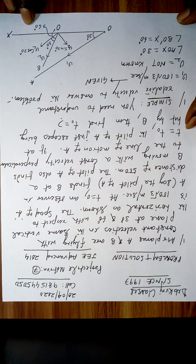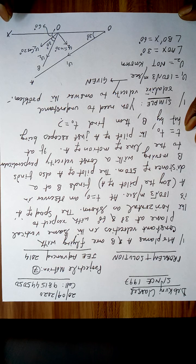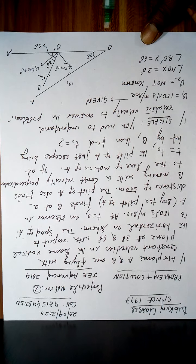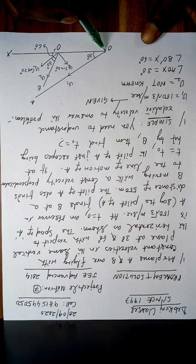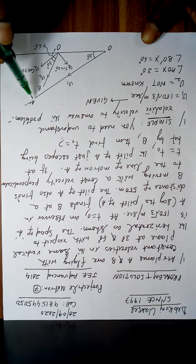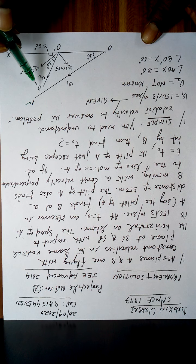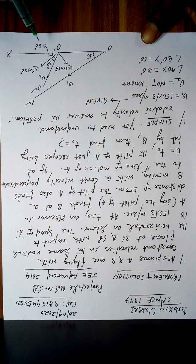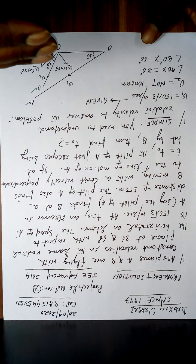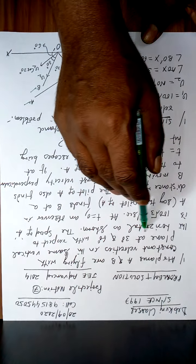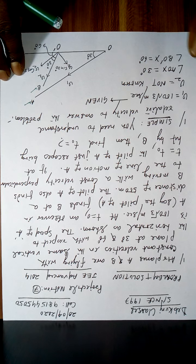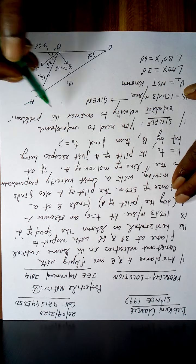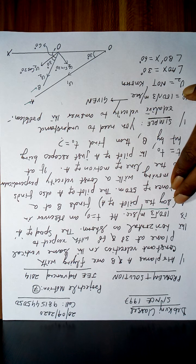This is a good numerical that came in the 2014 JEE Advanced paper 1. To understand it, you need to have knowledge of relative velocity. Now look at the problem: airplanes A and B are flying with constant velocities in the same vertical plane — airplane A is travelling at 30 degrees and airplane B at 60 degrees with respect to the horizontal. The speed of A is given as 100√3 meters per second at t = 0.